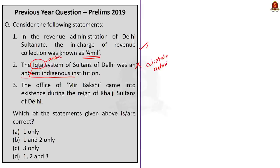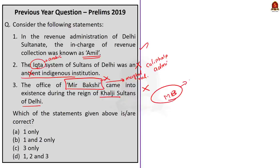The third statement: the office of Mirbaghshi came into existence during the reign of Khalji Sultans of Delhi. This office came into existence during the Mughal rule, not during the Sultanate. Mirbaghshi was part of the central administration of Mughals. Mirbaghshi headed the military department, nobility, and information and intelligence agencies. He was the official who kept army records and paid the troops. Mirbaghshi was also the chief paymaster. There were also subordinate Bhakhshis at the provincial level.